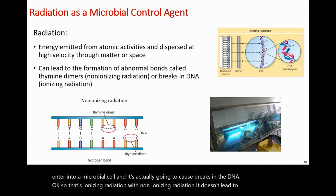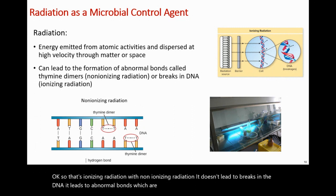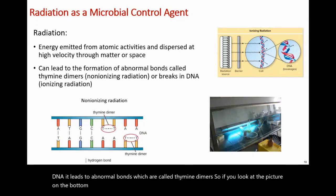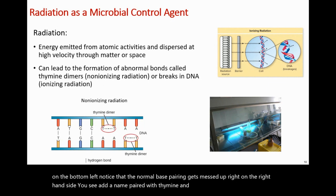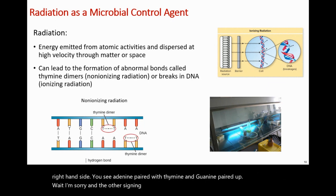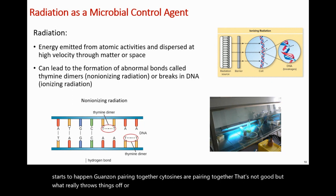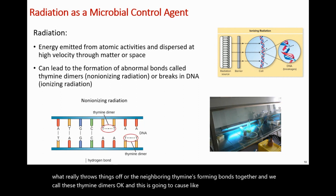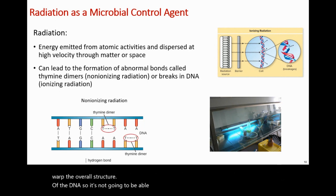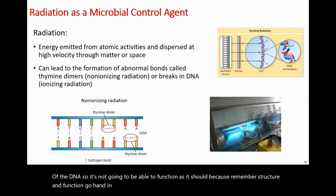Non-ionizing radiation does not lead to breaks in the DNA — instead it leads to abnormal bonds called thymine dimers. In the diagram, normal base pairing gets disrupted: adenine pairs with thymine normally, but neighboring thymines start forming bonds with each other rather than their complementary bases. These thymine dimers cause bulges in the DNA, warping its overall structure so it can no longer function as it should, since structure and function go hand in hand.